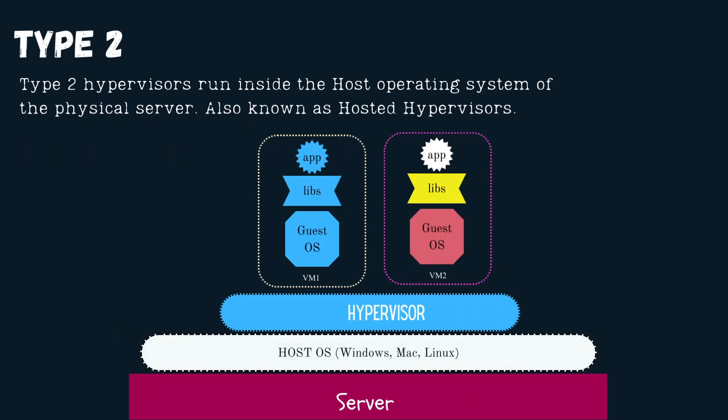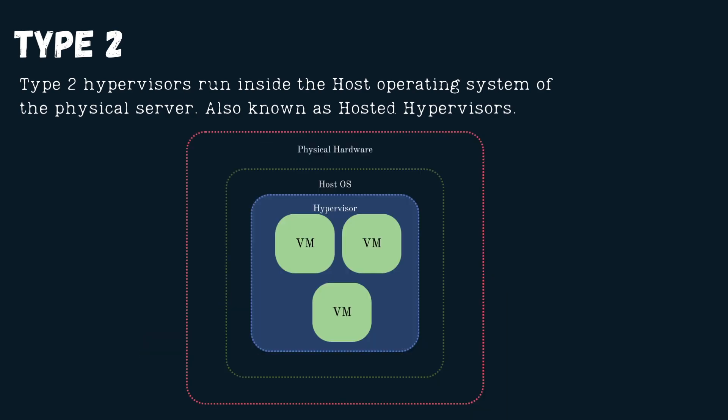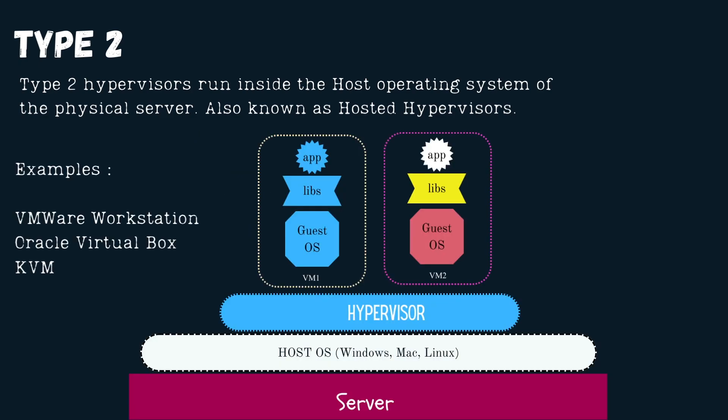Type 2 hypervisors require a host operating system. Your physical hardware — server or laptop — must have an operating system installed, such as Windows or Linux. Then you install the hypervisor just like any ordinary software. Once installed successfully, you will be able to run virtual machines on your computer, similar to a Type 1 hypervisor. Since Type 2 hypervisors are hosted on the host's operating system, they are also known as hosted hypervisors. Some examples are VMware Workstation, Oracle VirtualBox, and KVM.